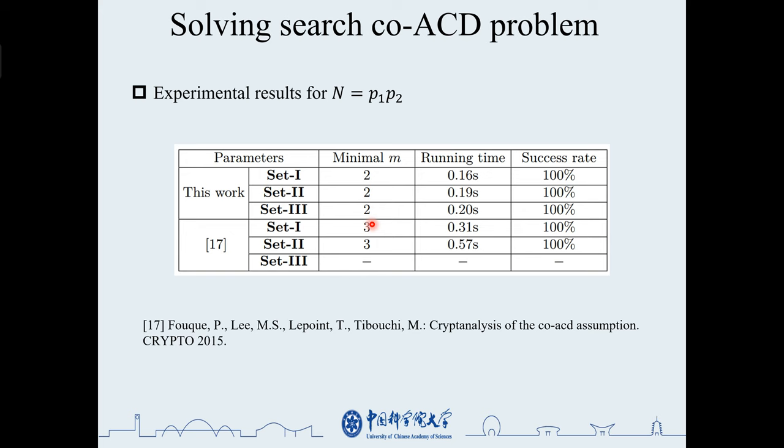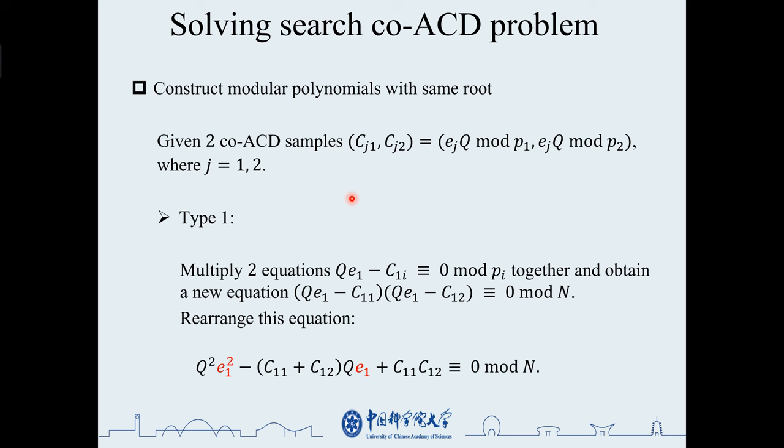I will introduce the complete method with n equals 2 as an example to facilitate your understanding. Given two co-ACD samples, we can consider ej as a small root and solve it using the Coppersmith method. Therefore, follow the steps mentioned earlier.